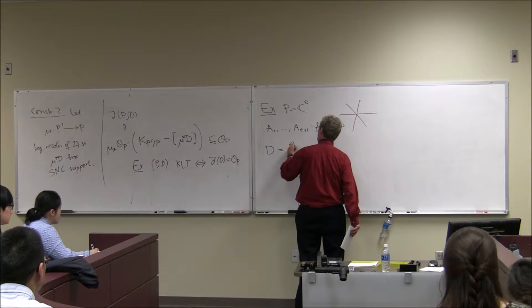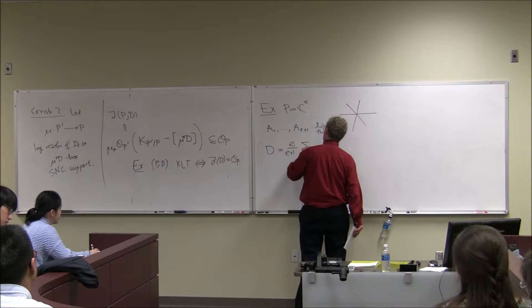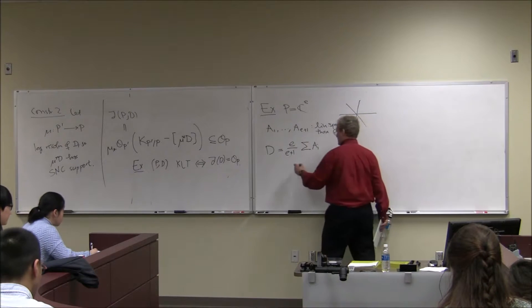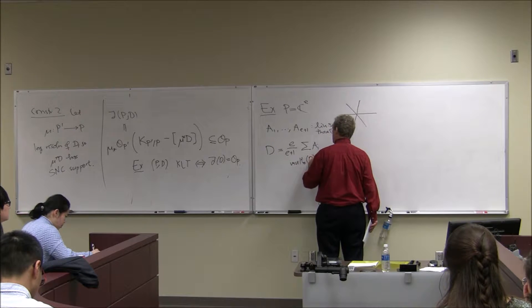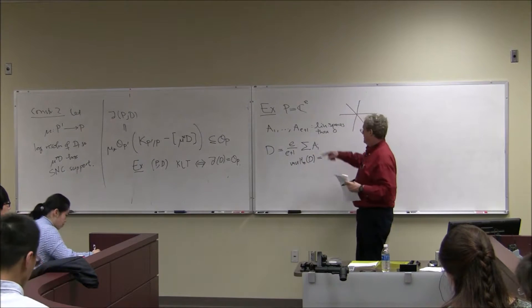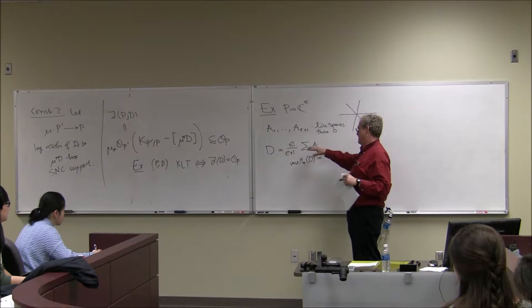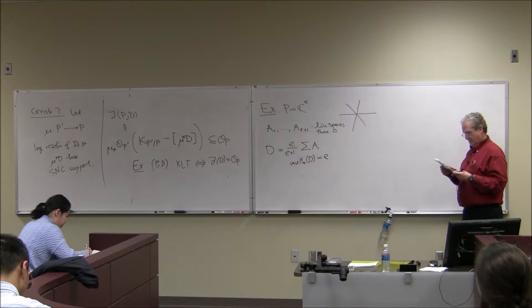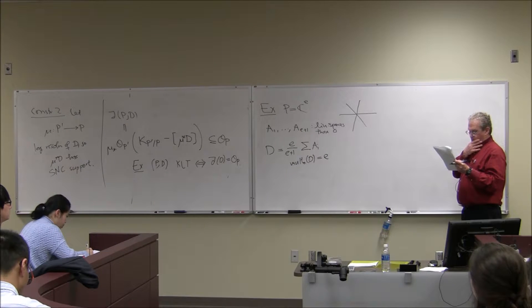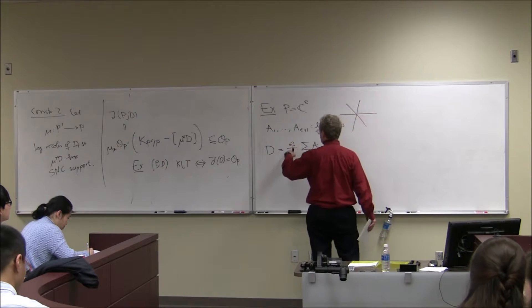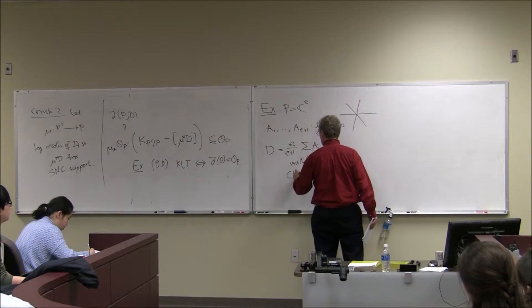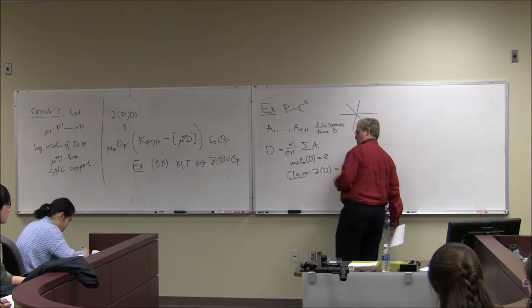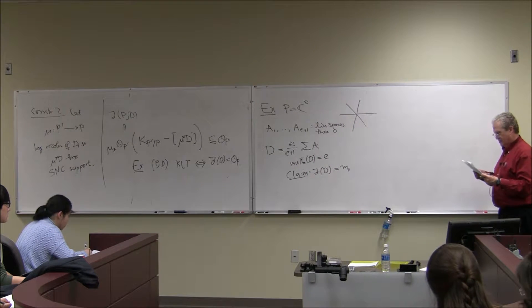Take a Q-linear combination: D = (E/(E+1)) times the sum of the A_i's. Notice the multiplicity of zero of D: each A_i contributes multiplicity one, the sum has multiplicity E+1, we divide by E+1 and multiply by E, so we get multiplicity E. I need at least E+1 of these linear spaces. The claim is that the multiplier ideal of D is just the maximal ideal of the origin — all functions vanishing at the origin.